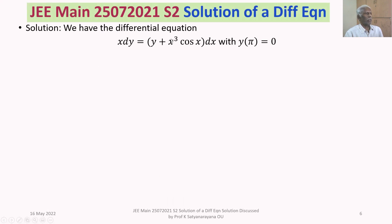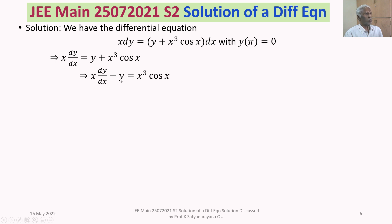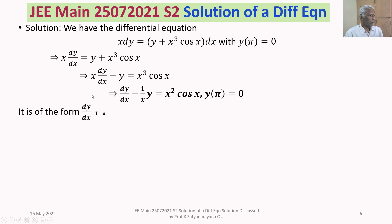We are given this differential equation with y at π equal to 0. The given differential equation is x dy/dx equals y plus x³ cos x. Sending y to the other side, we get x dy/dx minus y equals x³ cos x. Dividing throughout by x, we get dy/dx minus 1/x · y equals x² cos x.